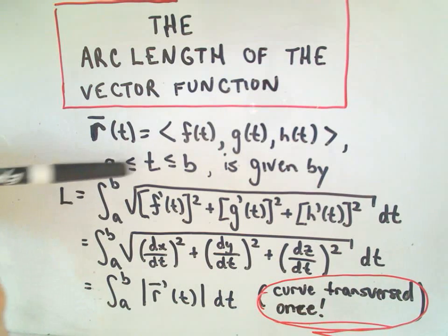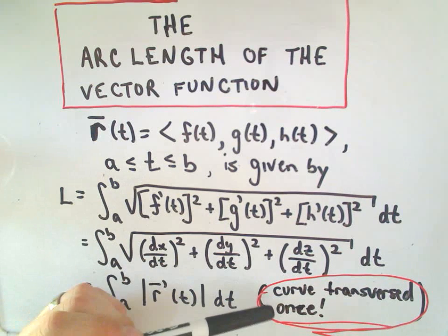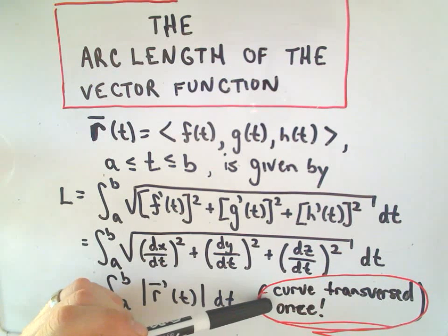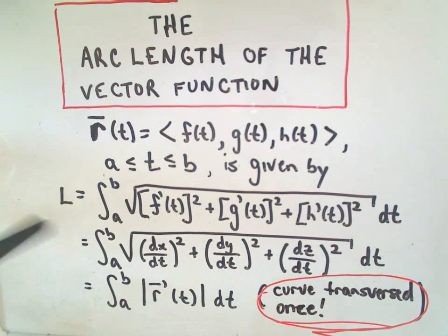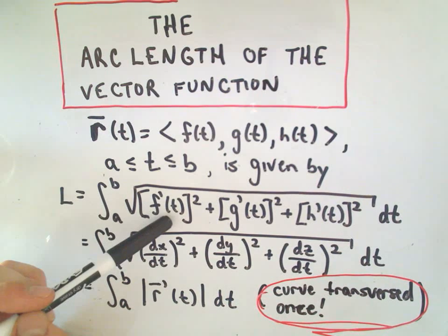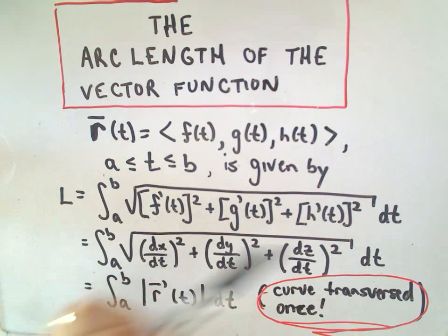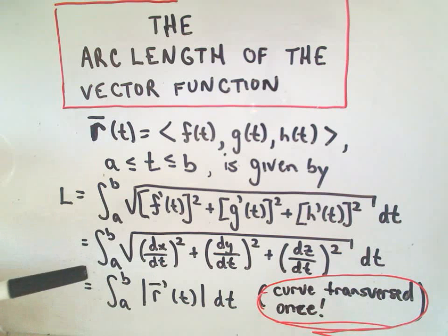Suppose t is in the interval from a to b. And suppose as t varies from a to b, if the curve is traversed exactly once, this is something we'll definitely have to be careful about. To calculate the length of that curve, we just integrate over that time interval. Take the derivative of f, square it, the derivative of g, square it, the derivative of h, square it, add them together and take the square root.